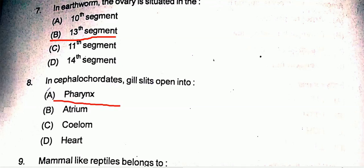Question eight: in cephalochordates, gills open into the pharynx. The correct answer will be option A.